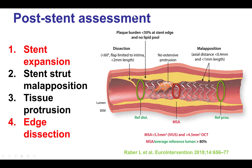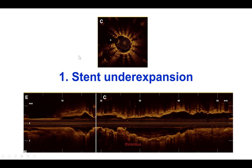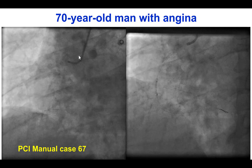Once a stent is placed, there are four critical parameters to assess, two of which — stent expansion and edge dissections — are more important for potentially causing stent thrombosis. So, how do we treat a patient who has stent thrombosis due to stent under-expansion?